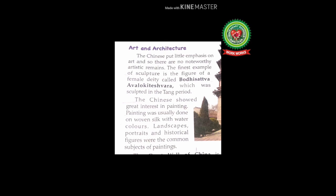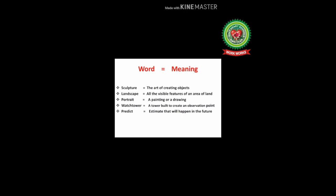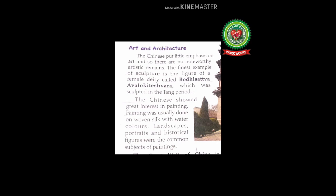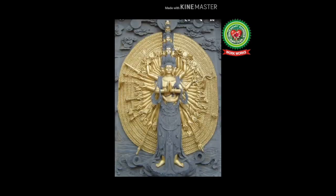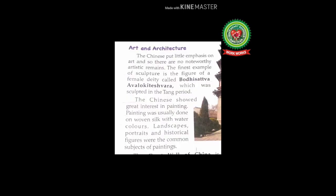The Chinese put little emphasis on art and so there are no noteworthy artistic remains. The finest example of sculpture is the figure of a female deity called Bodhisattva Avalokiteshwara, which was sculpted in the Tang period. Sculpture means the art of creating objects. The Chinese showed great interest in painting; painting was usually done on woven silk with water colors.